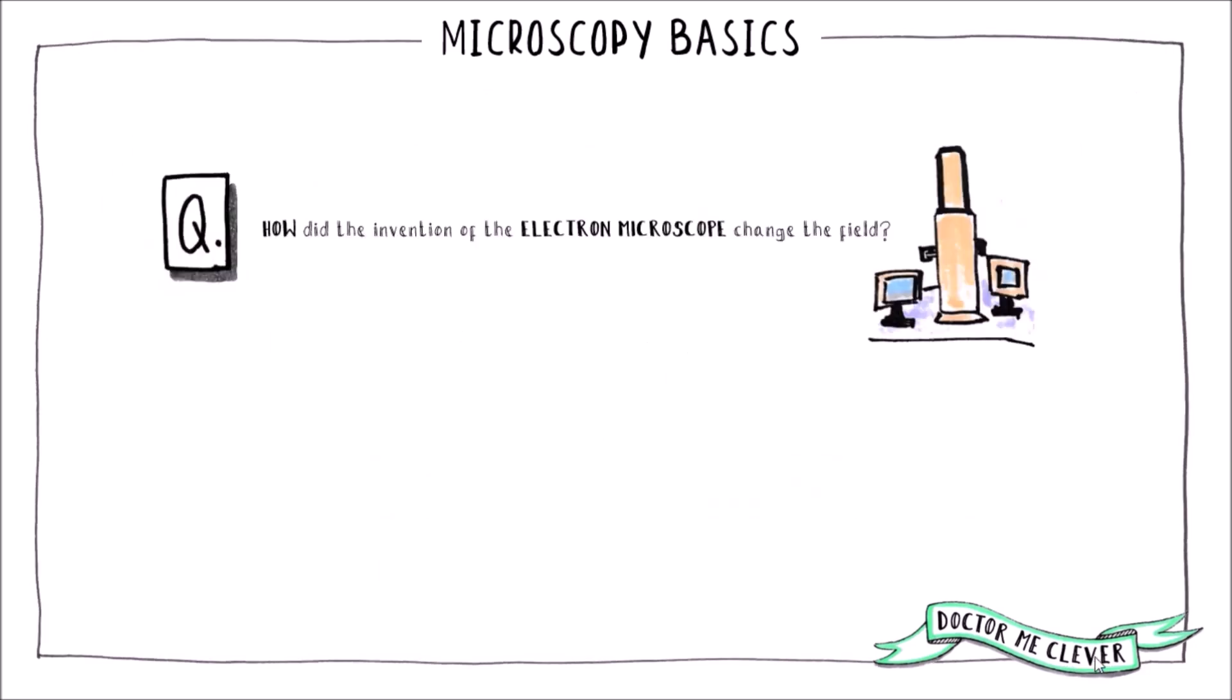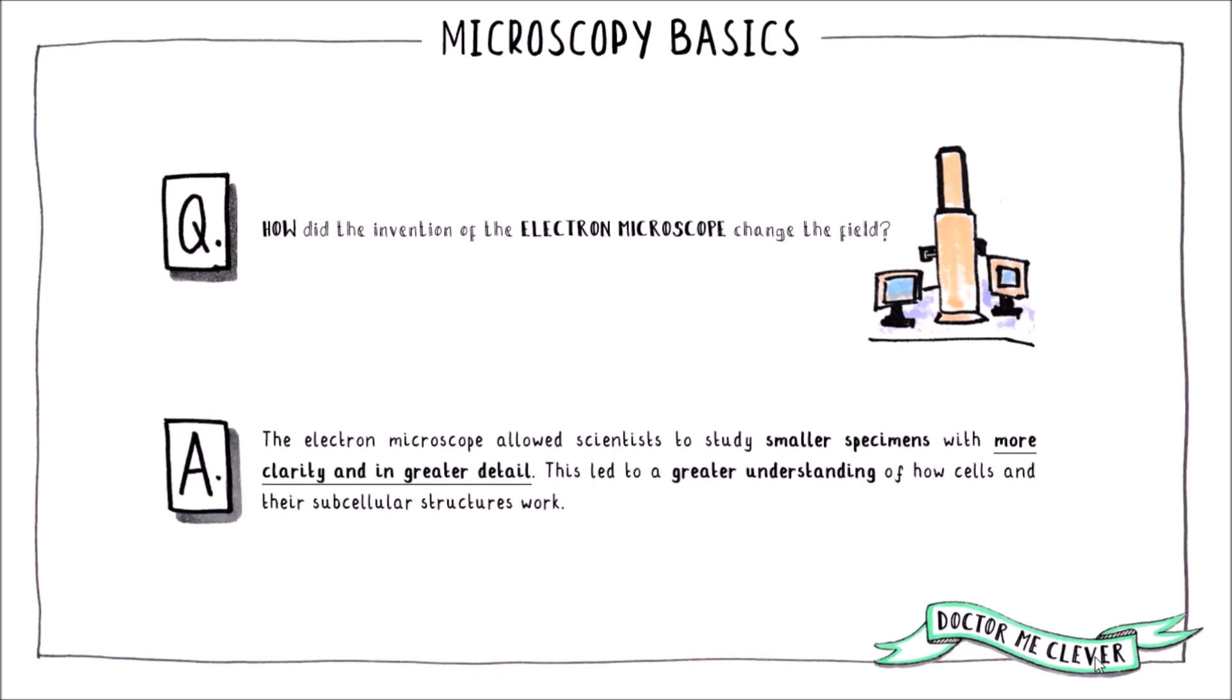You might get asked how advances in microscope technology have changed the field of biology or medicine and the answer to this question is that the electron microscope has allowed scientists to study smaller specimens with more clarity and in greater detail. These advances have led to a better understanding of how cells and their organelles or subcellular structures work leading to advances in research and our ability to treat many diseases.